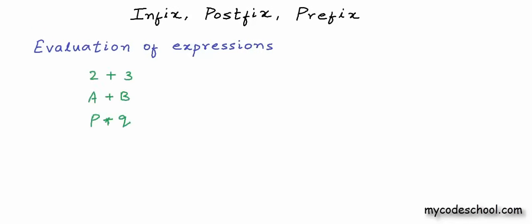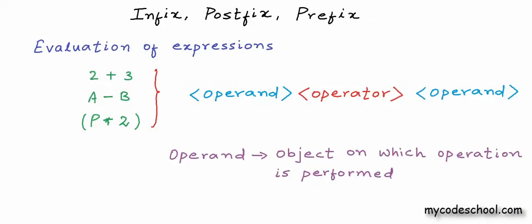So how do we write an expression? I have written some simple arithmetic expressions here. An expression can have constants, variables, and symbols that can be operators or parentheses, and all these components must be arranged according to a set of rules, according to a grammar. We should be able to parse and evaluate the expression according to this grammar. All these expressions have a common structure — we have an operator in between two operands. An operand by definition is an object or value on which an operation is performed. In the expression 2 plus 3, 2 and 3 are operands and plus is the operator.